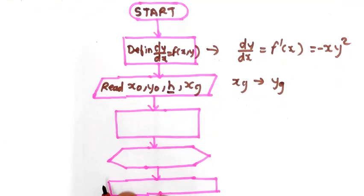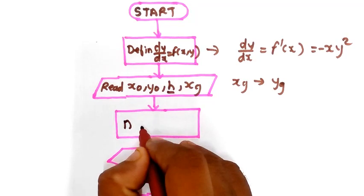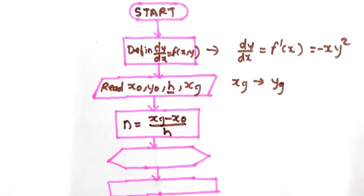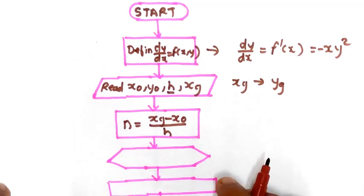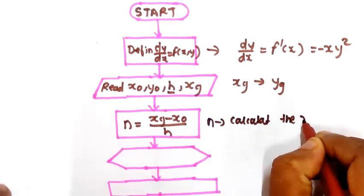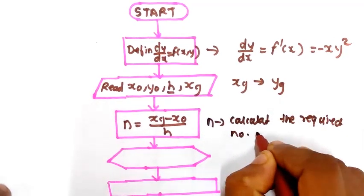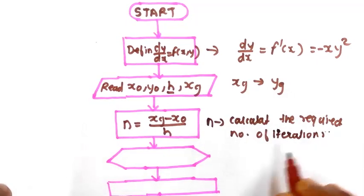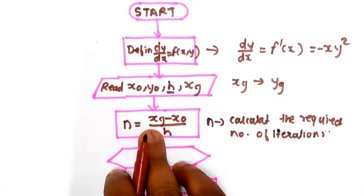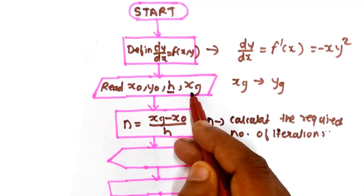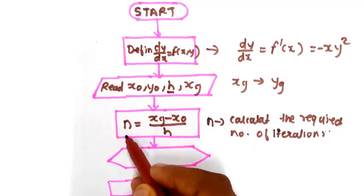The next step is to find out n, which is equal to xg minus x0 divided by h. n is used to calculate the required number of iterations. Since h, xg, and x0 are all given, you can find out the value of n.